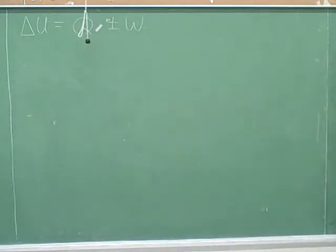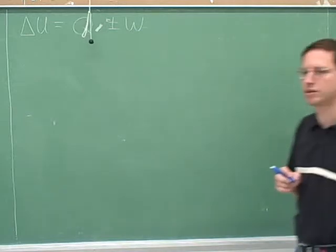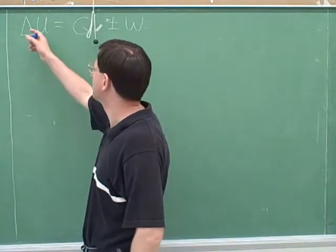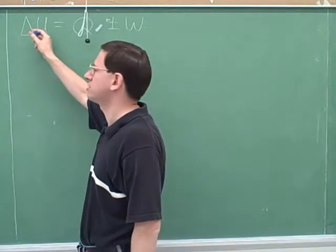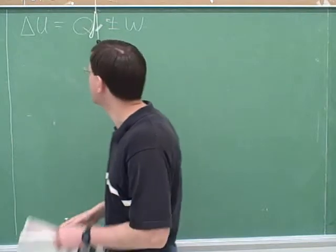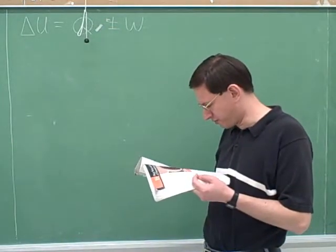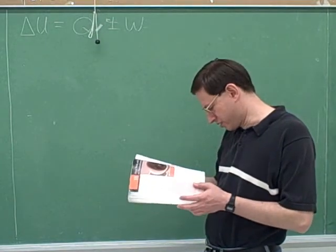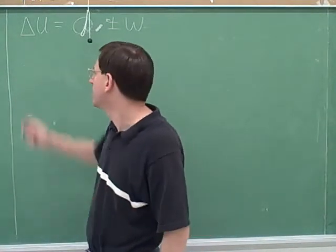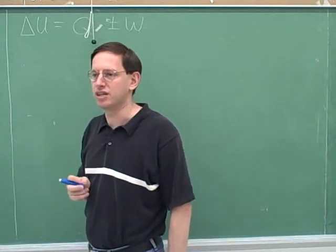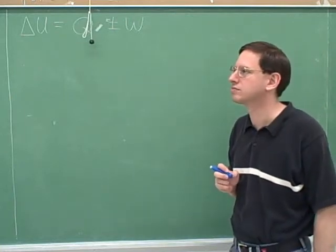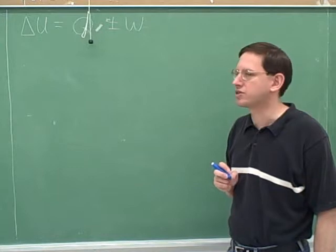We need to talk about what each of these terms stands for. Most books use U for this symbol, maybe some use E. Your textbook uses U for the total internal energy. So U here is the total internal energy, and delta U is the change in the total internal energy.